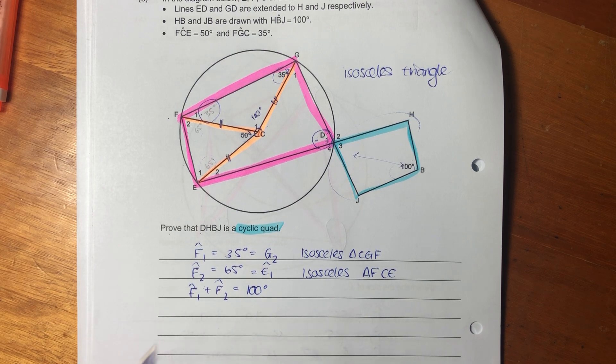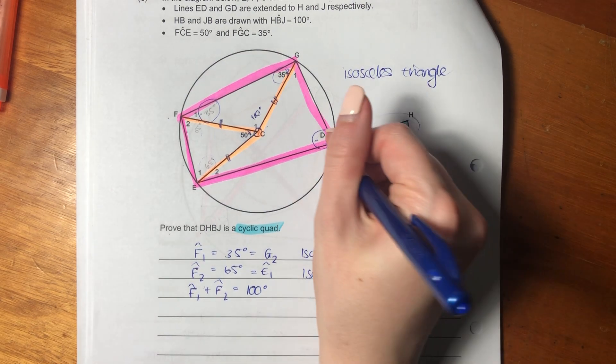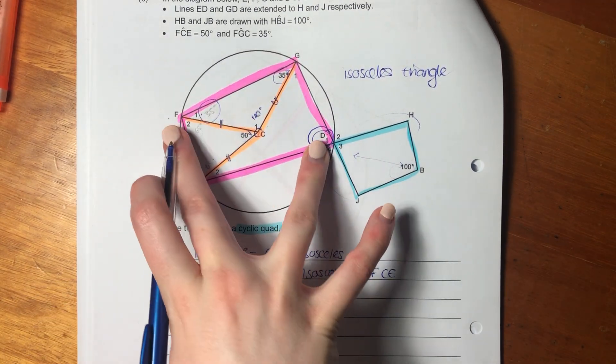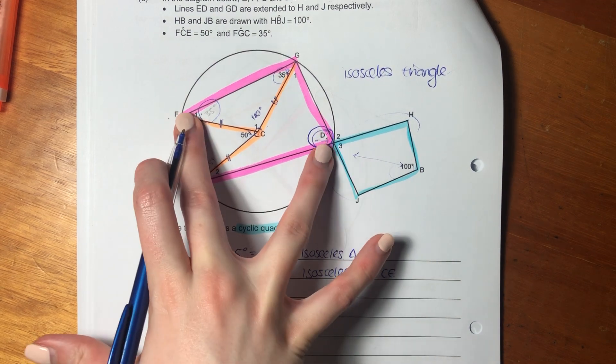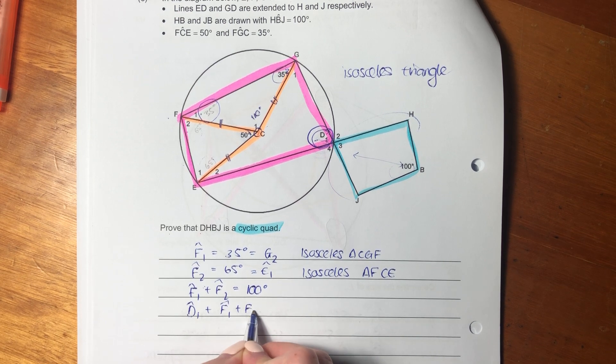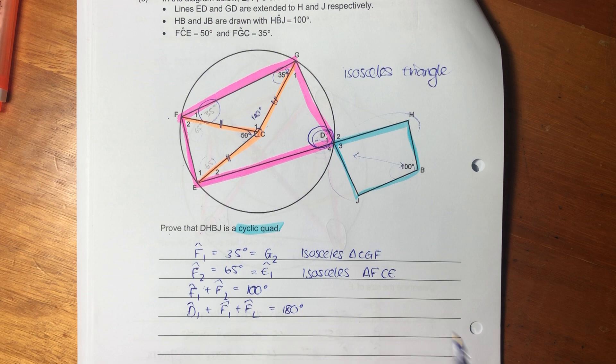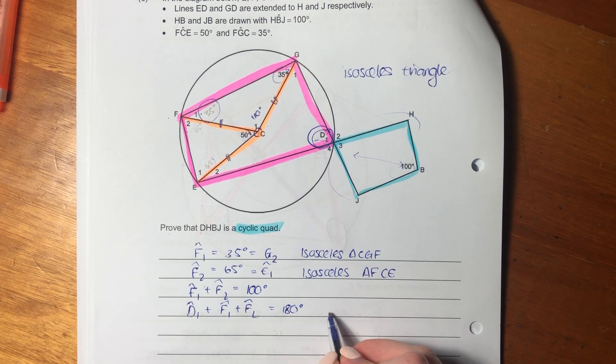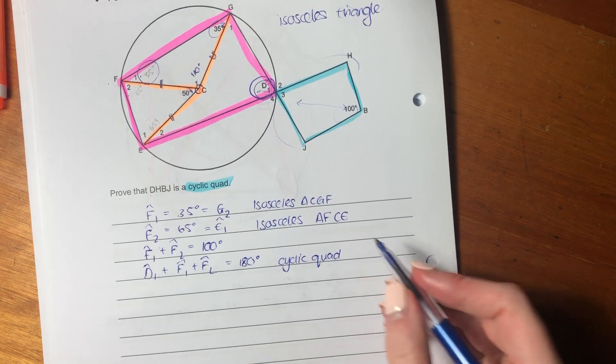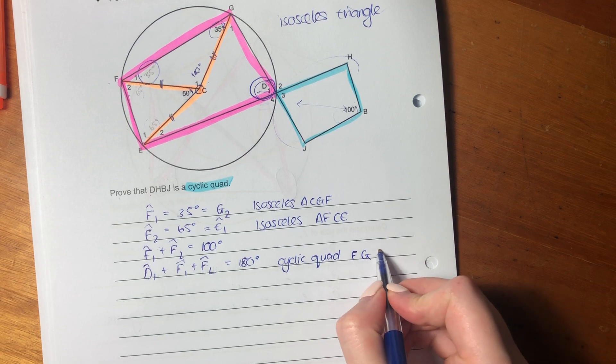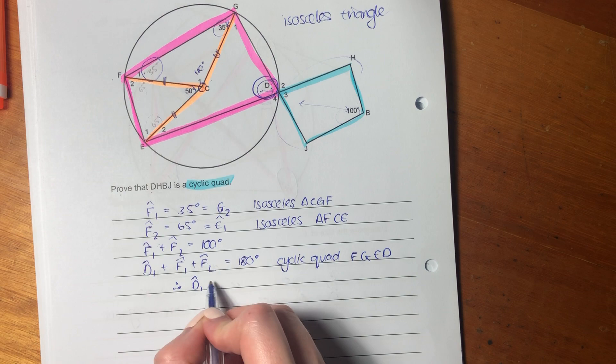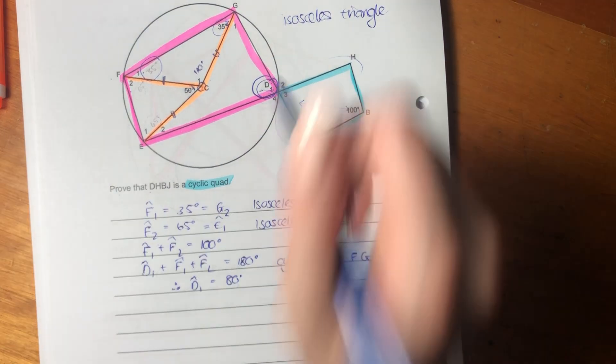And then what we're going to do is we're wanting to work out D1. Now, what did I tell you about a cyclic quad? I said we know that the opposite angles, the diagonal angles, have to add up to 180. So we say D1 plus F1 plus F2 equals 180 because of properties of a cyclic quad FGED. So therefore, D1 equals 80.